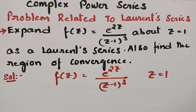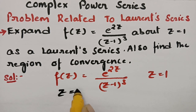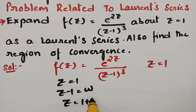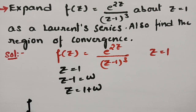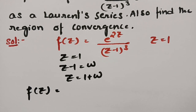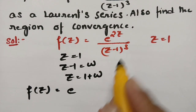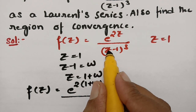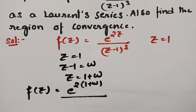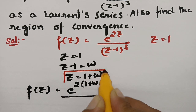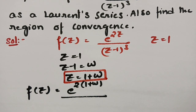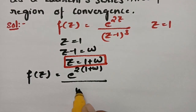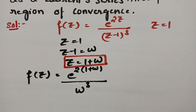Since we are expanding around z = 1, we let w = z - 1, and therefore z = 1 + w. Substituting into f(z): in place of z we write 1 + w, and z - 1 becomes w, so the denominator (z-1)³ becomes w³. This transforms f(z) entirely in terms of w.